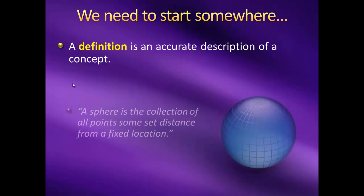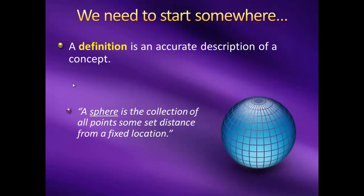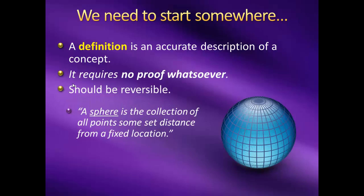So for instance, I could define a sphere as the collection of all points some set distance from a fixed location in space. An important thing about definitions is that they require no proof whatsoever. If we had to prove our definitions, we would have to phrase our proof in terms of other definitions. And if we had to prove those too, well, you see how this could get out of hand.